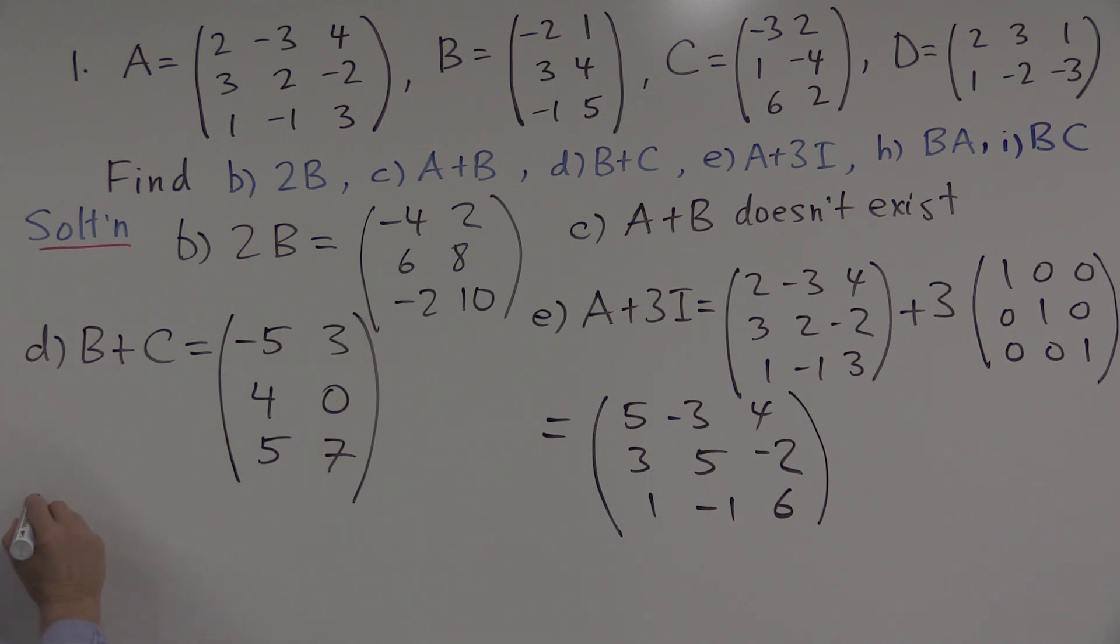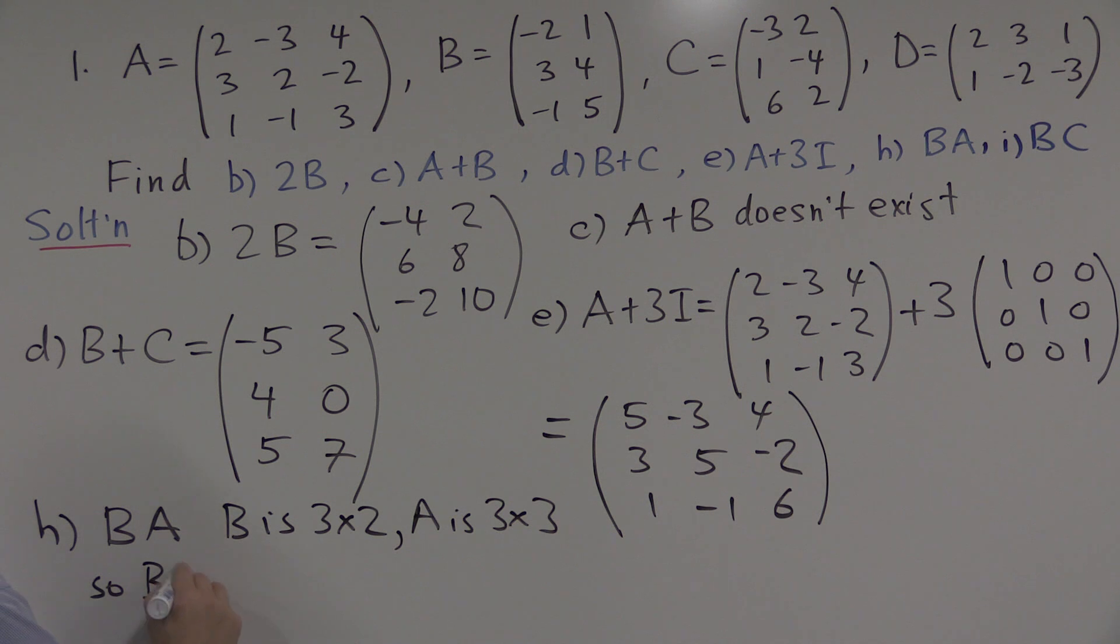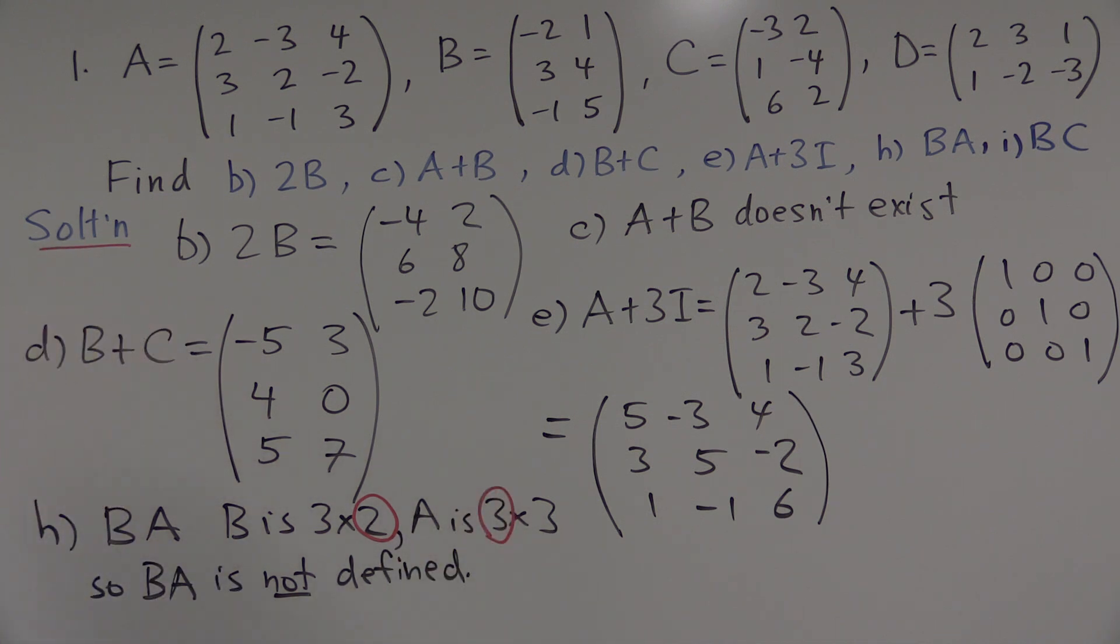How about the next one? B times A, the product of this matrix times this one. Well, B is a 3 by 2 matrix and A is 3 by 3. So the product BA is not defined. Why is that? In order for it to be defined, we require that this dimension and this dimension are equal. And that's to say that the number of columns of the first matrix and the number of rows of the second matrix have to be equal. Here they're not, so the product doesn't work.